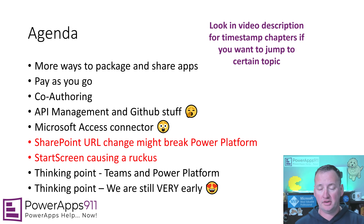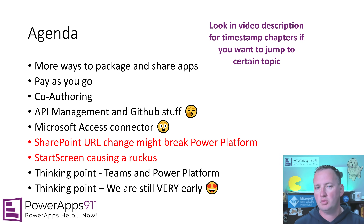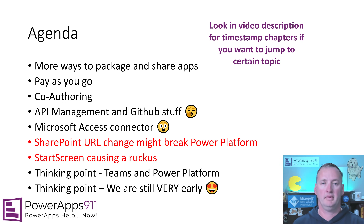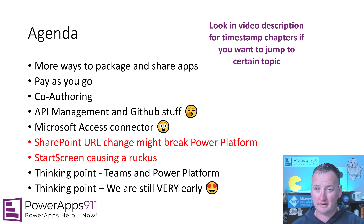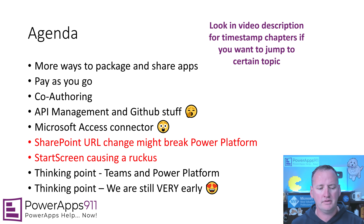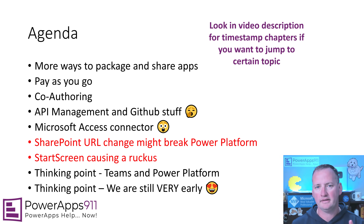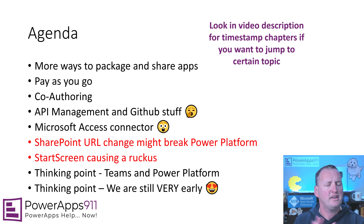Keep in mind there are timestamps and descriptions if you want to jump to a specific one. What we're going to cover: new ways to package apps, pay-as-you-go licensing, co-authoring, some developer-y stuff I'll point out because I think it matters, a Microsoft Access Connector, the SharePoint URL change and how that might break some stuff, the Start Screen feature that's causing confusion, and then some of my thinking points to put things into context for the rest of this year and next.